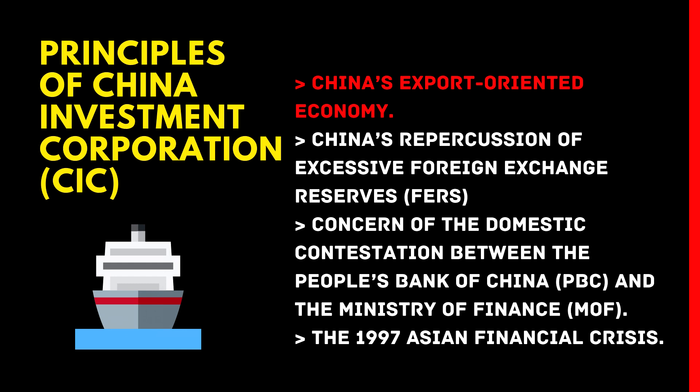There are structural conditions that explain how the Chinese government established CIC based on the history of China. The first condition concerns China's export-oriented economy. Since 1979, China reformed its economic development model from a centrally planned economy to a market economy. Unlike Soviet perestroika — where the state abruptly stepped back from the economy — the Chinese government leveraged its state authority to develop its economy hand-in-hand with cultivating political legitimacy.